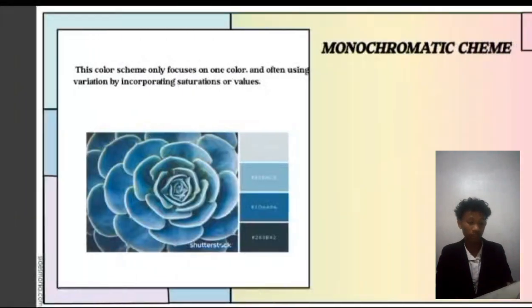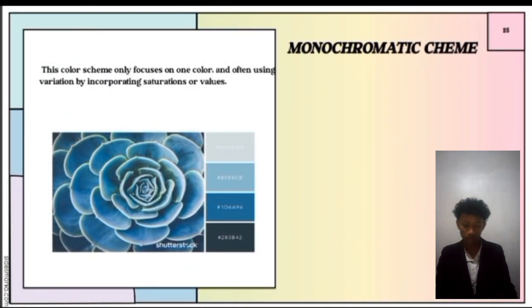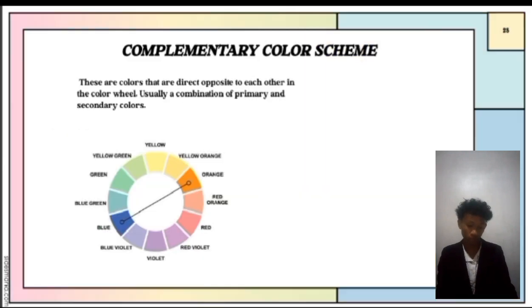Third, achromatic color. This color only revolves around using desaturated colors like black, gray, and white. Fourth, analogous color. Analogous colors are a group of colors that are adjacent on a color wheel. Fifth, complementary colors. These are colors that are direct opposites of each other on the color wheel, usually a combination of primary and secondary colors.